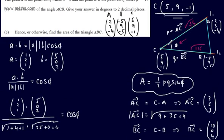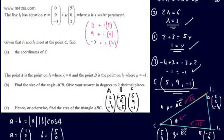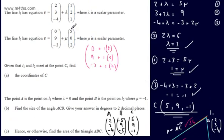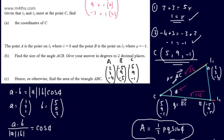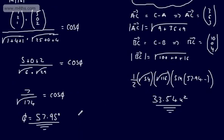Note that the angle was found using the original direction vectors — these are multiples of AC and BC, so the angle is the same. Either approach gives angle ACB = 57.95° and area = 33.54 units squared to two decimal places. Hopefully that gives you enough to tackle questions like this in an exam.